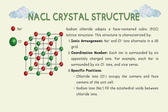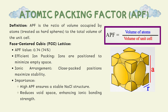Let's talk about the atomic packing factor, or APF. APF is the ratio of the volume occupied by atoms to the total volume of the unit cell. The formula is: APF equals the volume of atoms divided by the volume of the unit cell. One of the most efficient structures is the face-centered cubic, or FCC, lattice. It has an APF value of 0.74, meaning 74% of the space is occupied by atoms. This efficient packing minimizes empty space, and the high APF is crucial for stability in materials like NaCl, as it reduces voids and enhances ionic bonding strength.